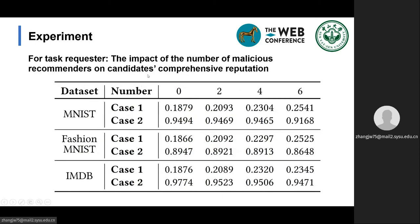To show the influence of recommenders' fake reputation on comprehensive reputation, we considered two cases. Case 1 is that different numbers of recommenders maliciously give a high reputation rating of 0.99 to candidates with a data accuracy rate of 0.1. Case 2 is that different numbers of recommenders maliciously give all candidates a low reputation. We observe the impact of both cases on the comprehensive reputation of participants with data accuracy rates of 0.1 and 1.0 respectively. This table shows that in these two cases, for every two additional malicious recommenders, the reputation change does not exceed 0.0297. This shows that even if the number of fake recommenders increases, the comprehensive reputation is still useful.